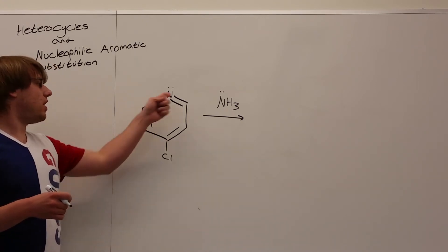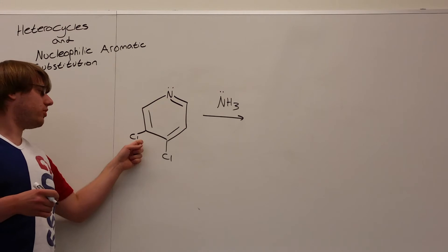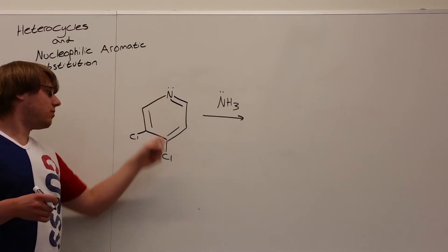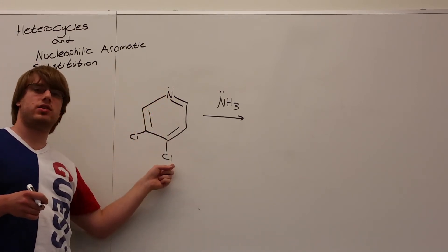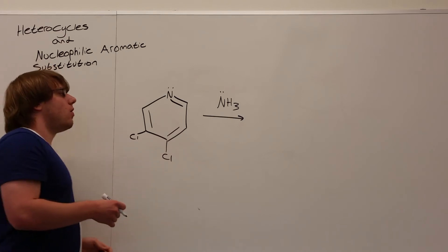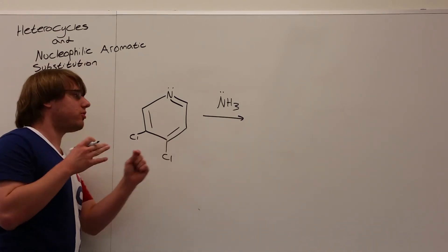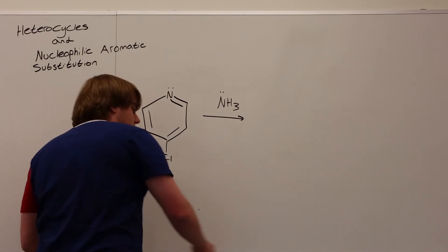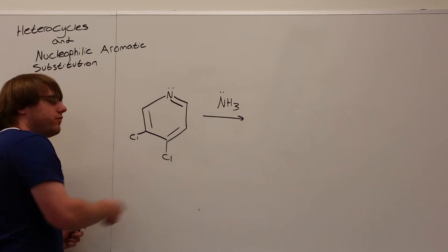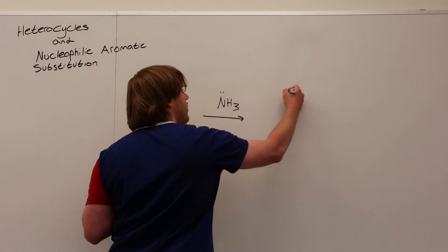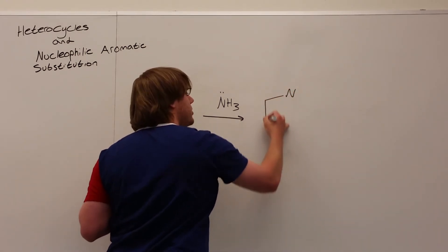Now if we want to go the quick and easy way, we know that what should happen is the leaving groups that are in the ortho or para position will be replaced by what's over the arrow. So here I have this nitrogen, meta to it is a chlorine leaving group, and para to it is this leaving group. We know that only leaving groups that are ortho or para can be replaced, so what's going to happen is this NH3 can only replace one of these two chlorines.